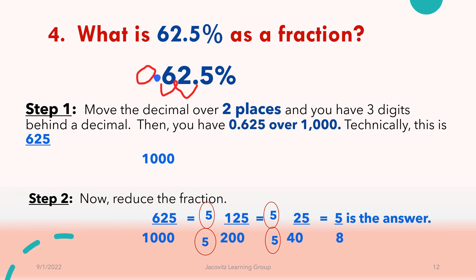I did it two times to keep it simple. Five goes into 625, 125 times. Five goes into 1,000, 200 times. So you had 125 over 200. You reduce it again to 25 over 40. So five-eighths is your answer.